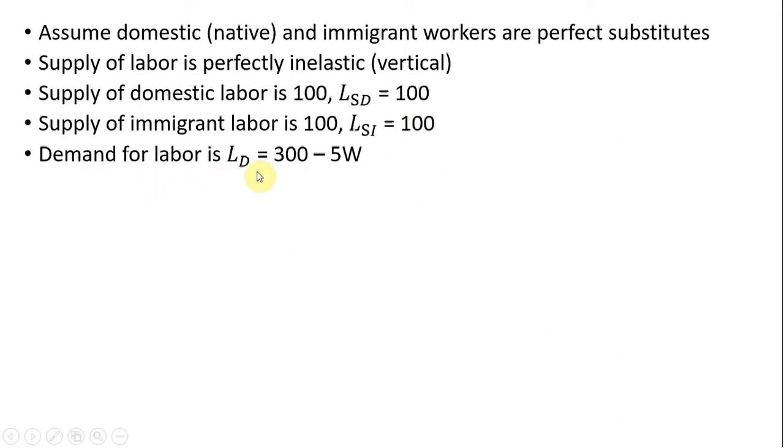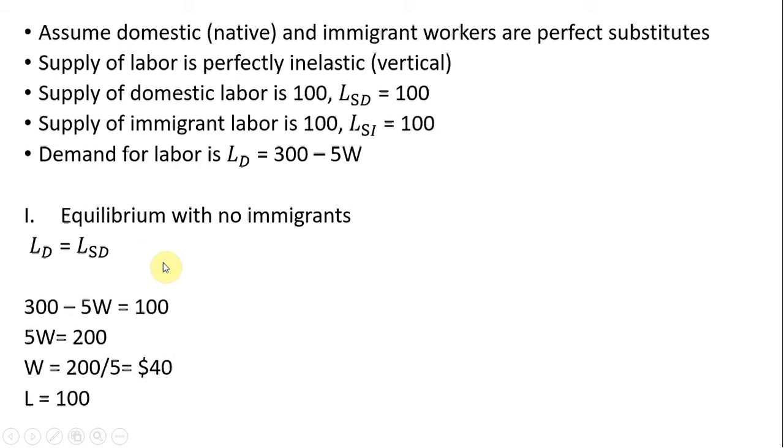The demand for labor is given by 300 minus 5W, where W is the wage. Remember, firms demand labor. And so we're trying to find the immigration surplus. To do that, we're going to first get the equilibrium with no immigrants in the labor market. So setting the labor demand equal to the domestic labor supply: 300 minus 5W equals 100. Subtracting 100 from both sides and then dividing through by 5, the equilibrium wage is $40, and there are 100 domestic workers employed.